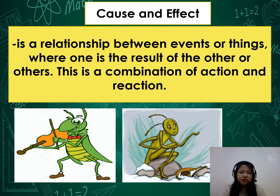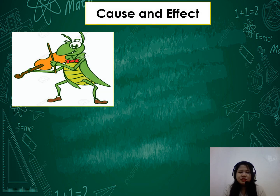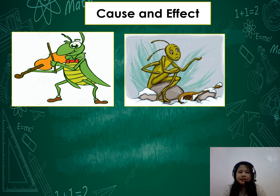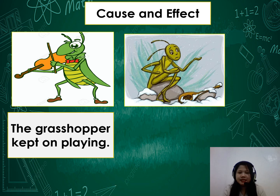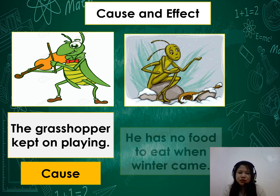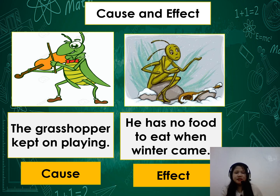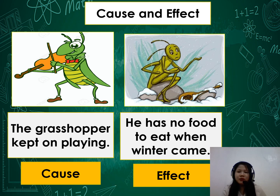Let's find out. In the first picture, the grasshopper kept on playing — this is the cause. The next picture shows he has no food to eat when winter came — this is the effect of the action. When we say cause and effect, it is the action and the reaction, or the result of the action. Did you understand?